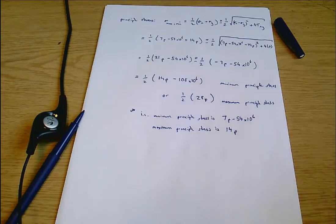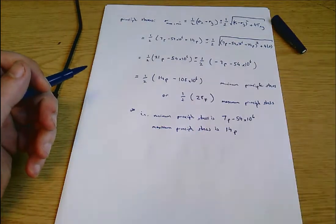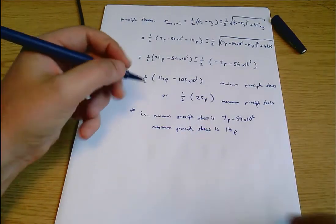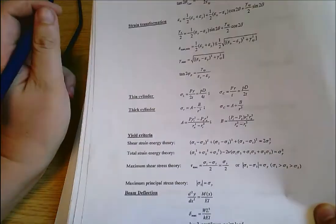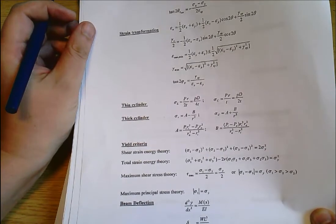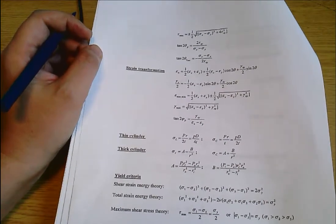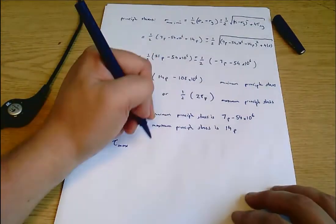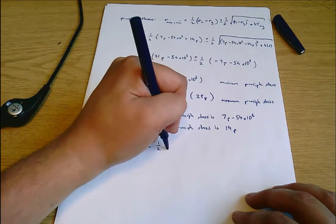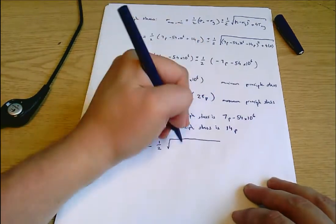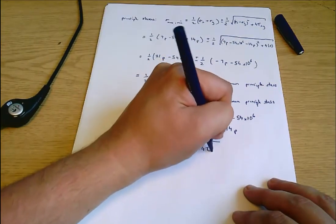The maximum in-plane shear stress is tau max. It's in the formula sheet, plus or minus one-half square root sigma X minus sigma Y all squared plus 4 tau XY squared.